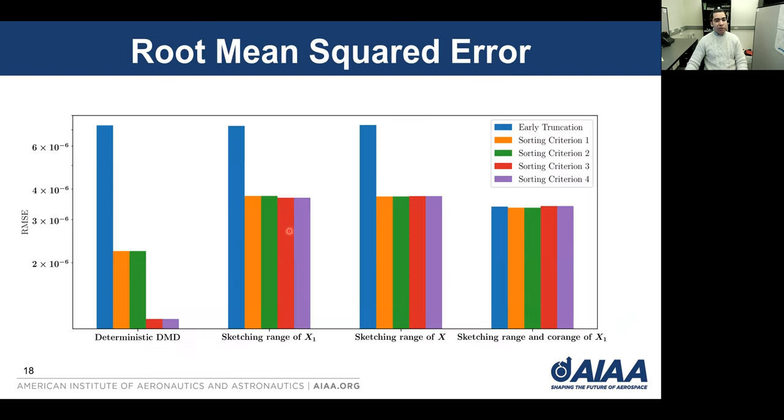Finally, these are the root mean squared error for prediction with different approaches and different sorting criteria. We can see that sketching with DMD or sketchy DMD is providing acceptable accuracy compared to the deterministic DMD, which is more expensive.